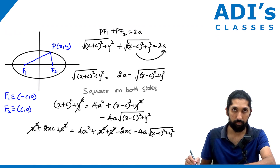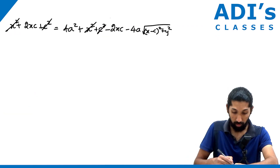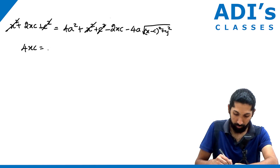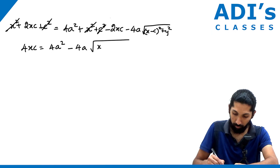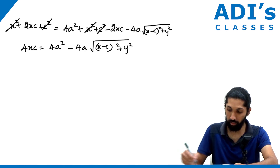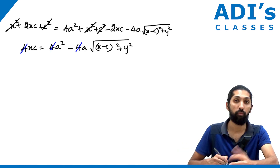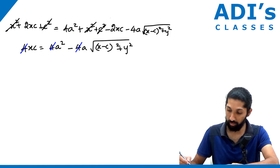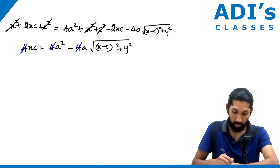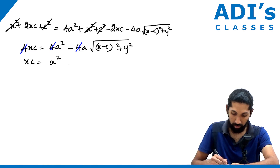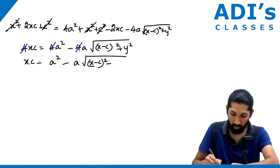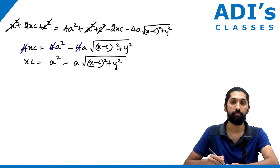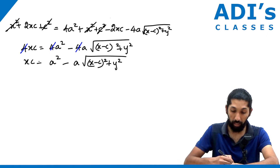After cancellation, transposing 2xc gives 4xc = 4a² − 4a·√((x−c)² + y²). Dividing everything by 4: xc = a² − a·√((x−c)² + y²). We need to transpose and square one more time.